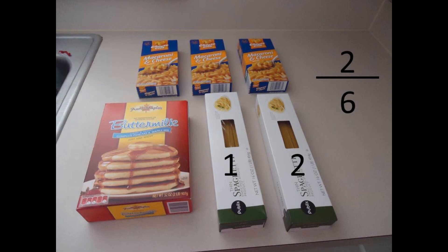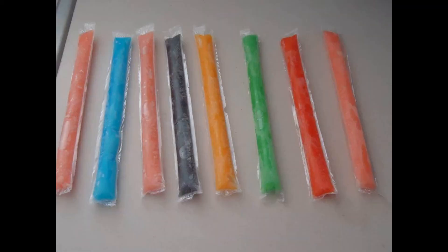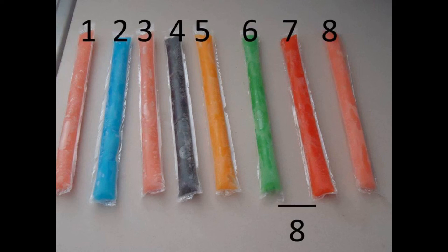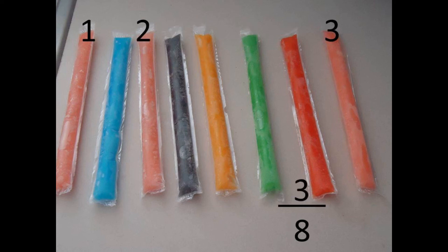After she eats the spaghetti, Ms. Rose is going to want a popsicle for dessert. Let's find the fraction of popsicles that are pink. As always, let's start with the denominator. What should it be? 8! Good! There are 8 total popsicles. What should the numerator be? 3! Stupendous! There are 3 pink popsicles. The fraction of the popsicles that are pink is 3 eighths.